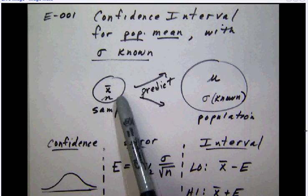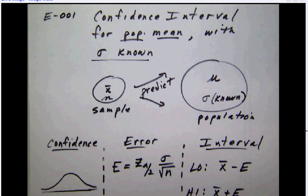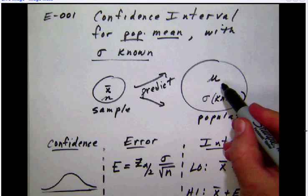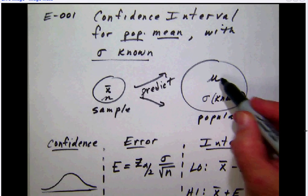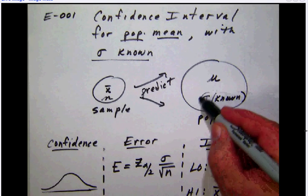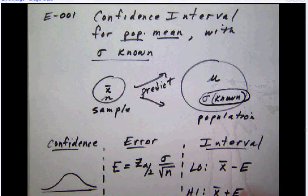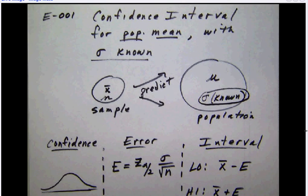So in our sample, we are going to know x bar, the sample mean. We are going to have n, a sample size. We are trying to predict the population mean for all the lives of these light bulbs. But for some reason, we know the population standard deviation, perhaps from an earlier experiment. In this case, that will be given to us.